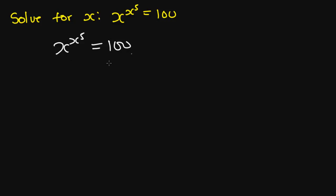So you are going to raise both sides to the power 5: x to the power x exponent 5 all to the power 5 is equal to 100 exponent 5. And from here I'm going to use the interchange rule.